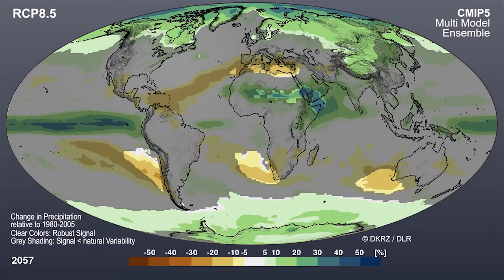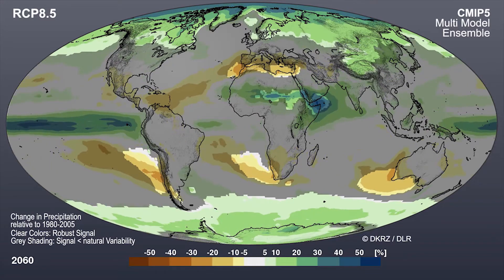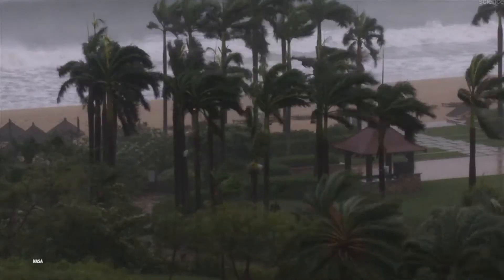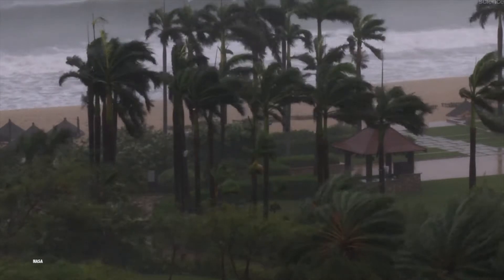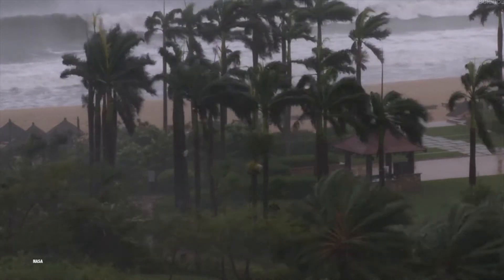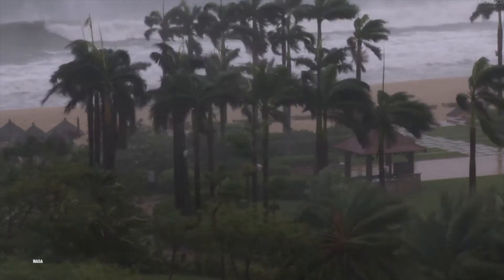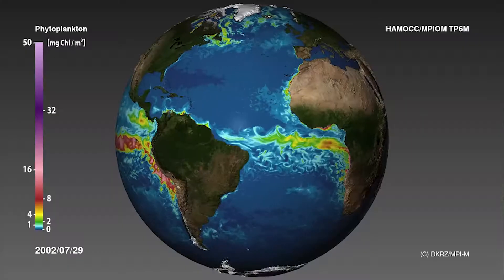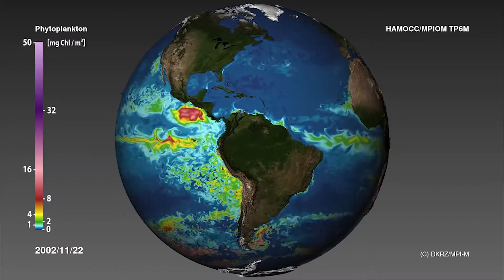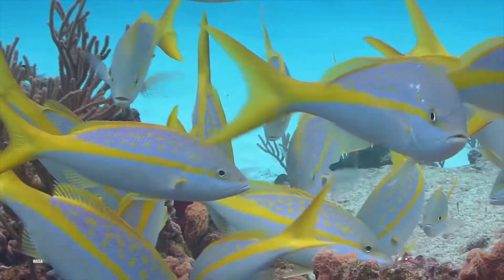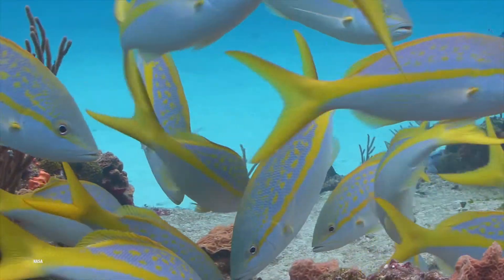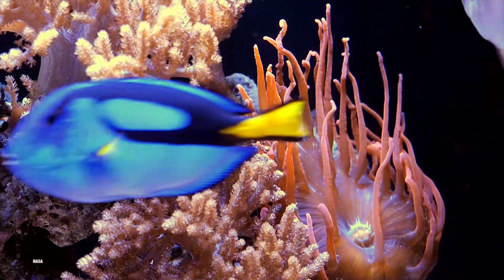CMIP outcomes are used for understanding climate change impacts. For example, precipitation, which is critical to agriculture and to human living conditions. And also, the changes in the biogeochemistry of the oceans are critical for fisheries, and particularly ocean acidification, which has a dire effect on coral reefs.